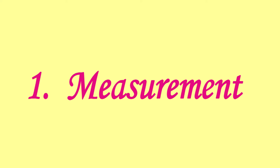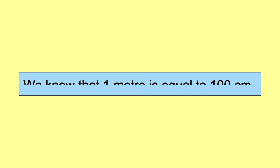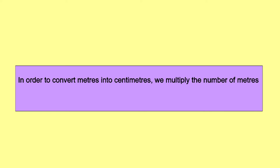Chapter 1: Measurement. We know that 1 meter is equal to 100 centimeters. In order to convert meters into centimeters, we multiply the number of meters by 100.